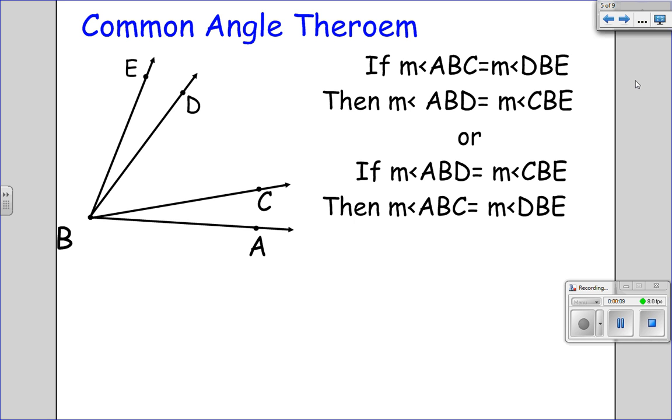The Common Angle Theorem states that if the measure of angle ABC equals the measure of angle DBE, then the measure of angle ABD equals the measure of angle CBE.